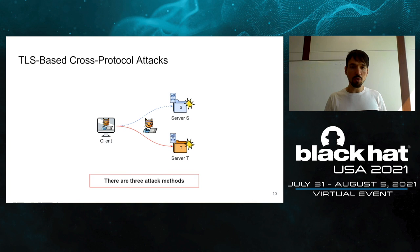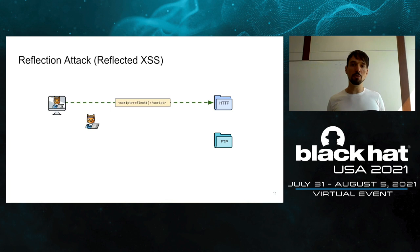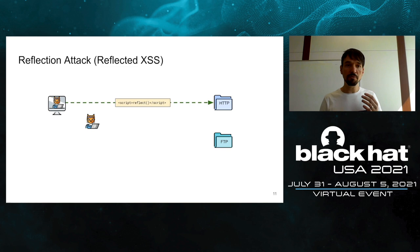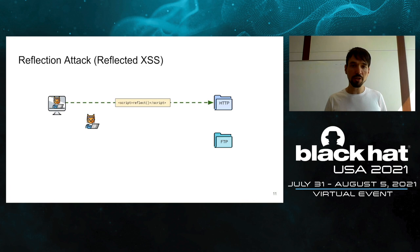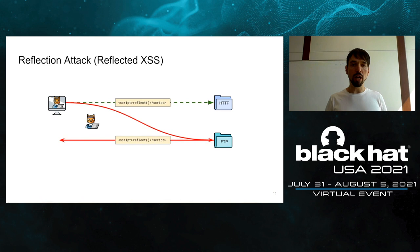To perform such attacks, we developed three attack methods focused on web-based attacks. The first is a reflection attack, similar to reflected XSS. The attacker triggers a GET request containing JavaScript, which is redirected to an FTP server. The FTP server's behavior reflects the content back, yielding a reflected attack. The second attack is a download attack, where the attacker triggers a request to retrieve stored data from an FTP server.